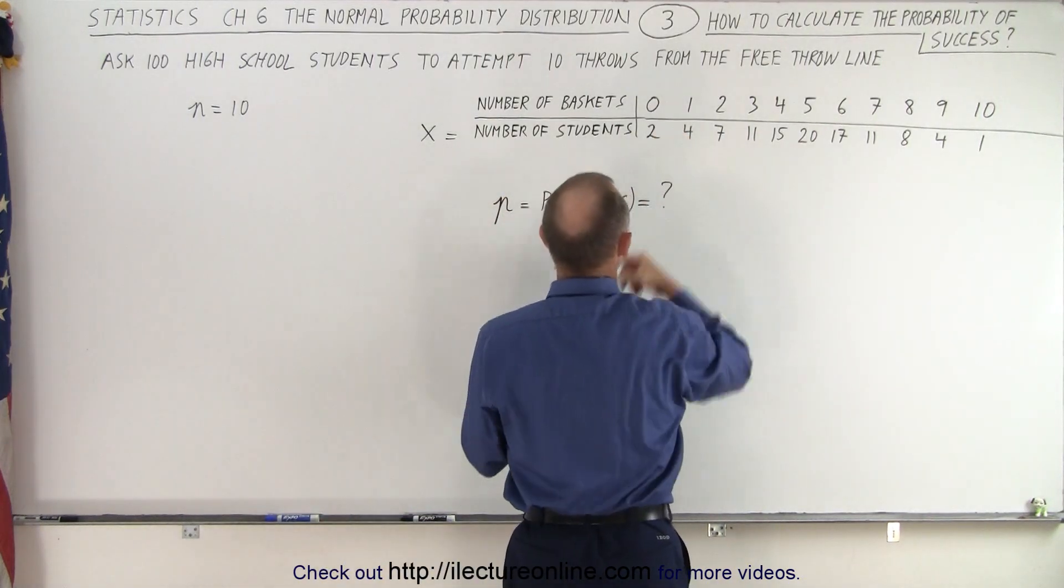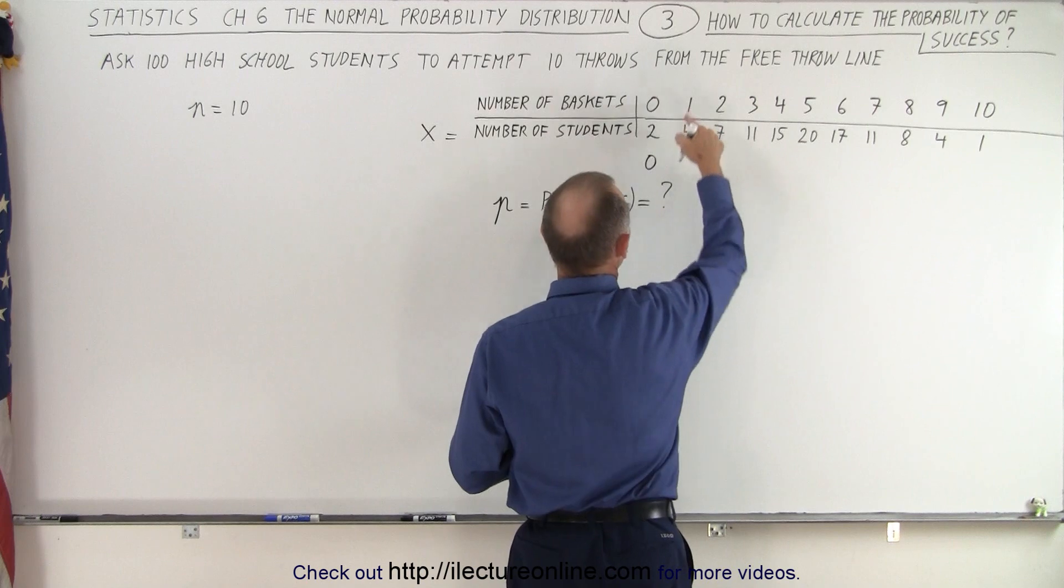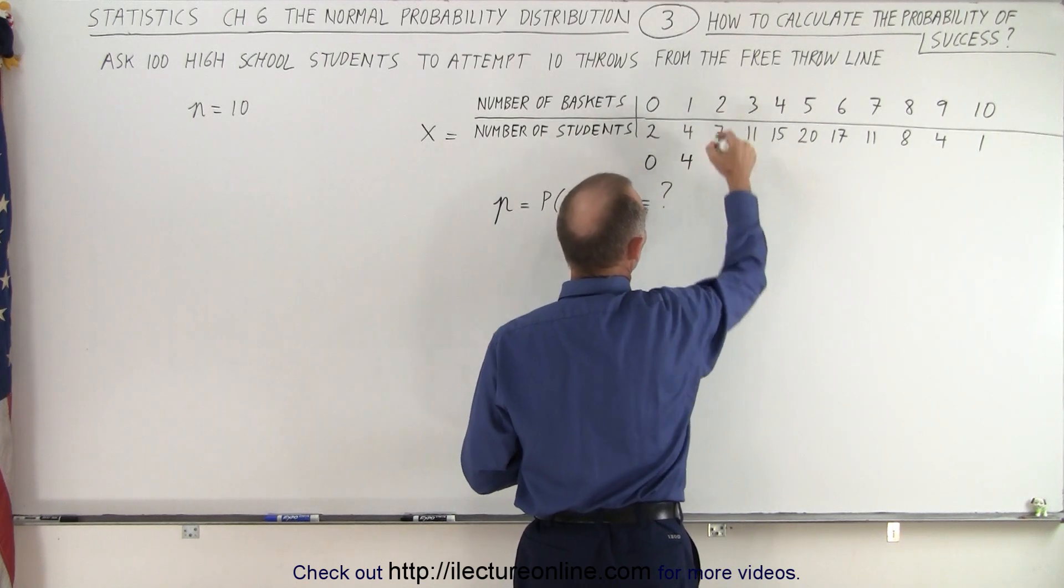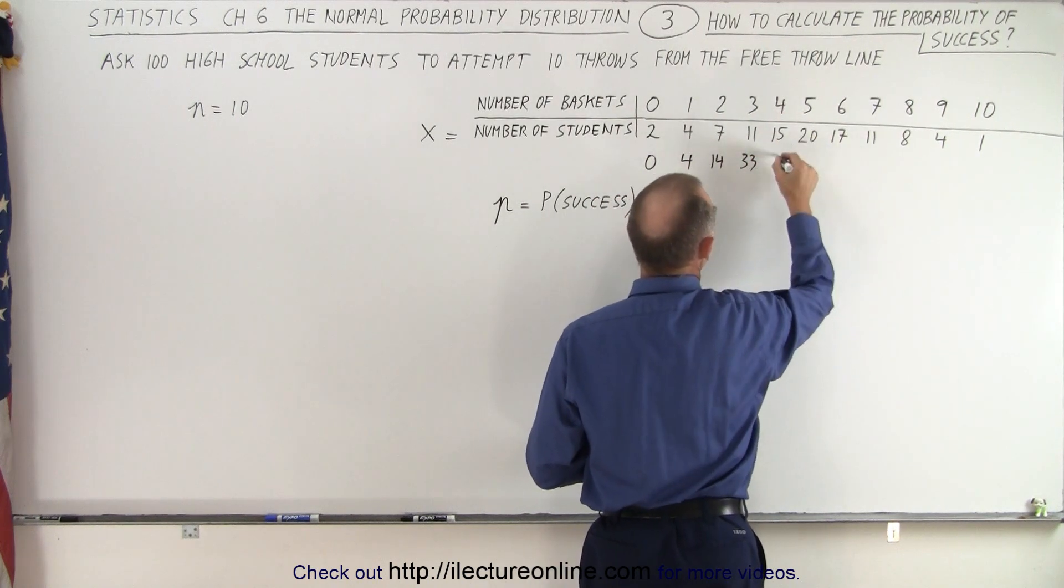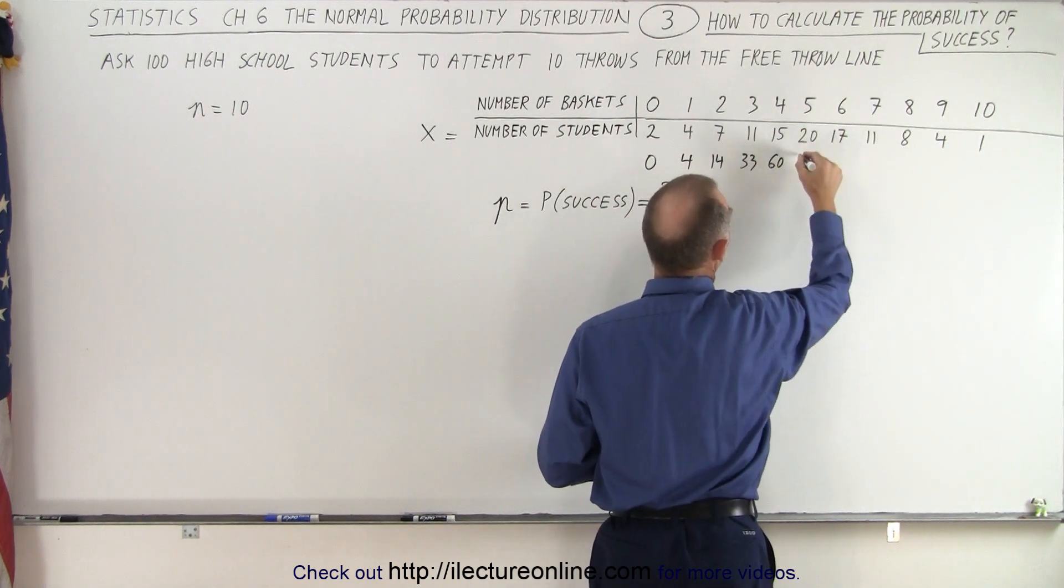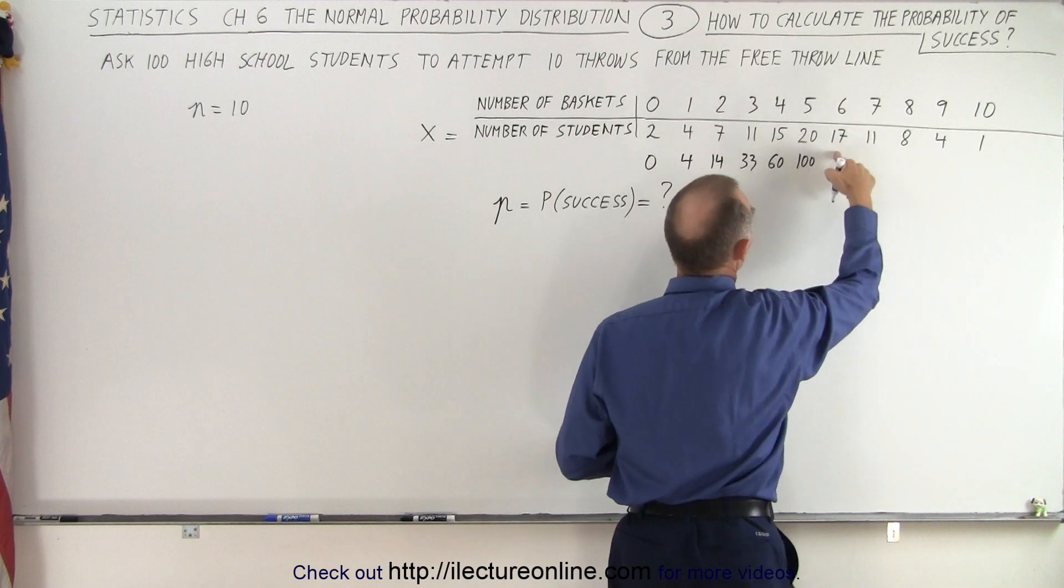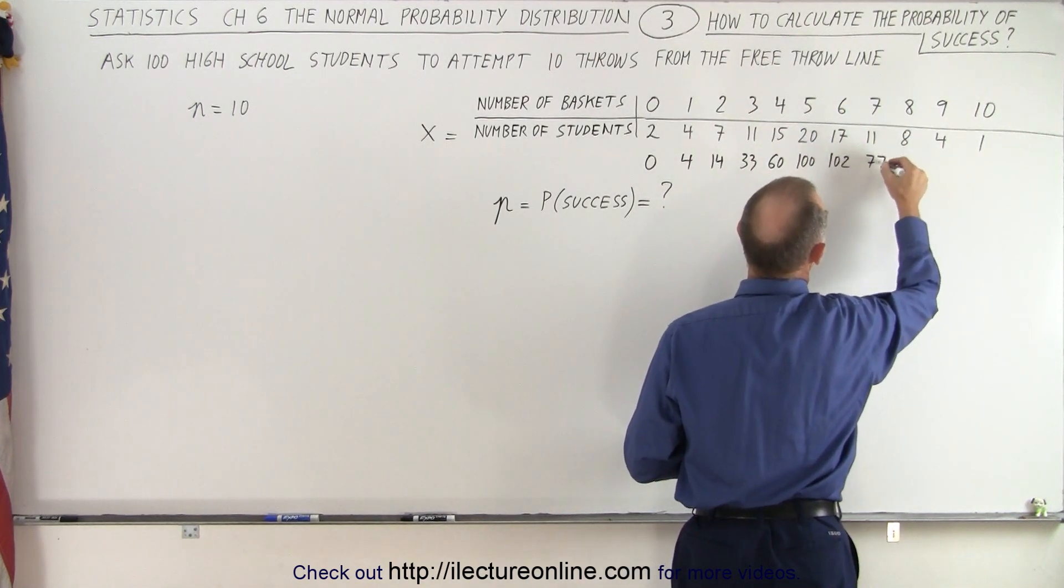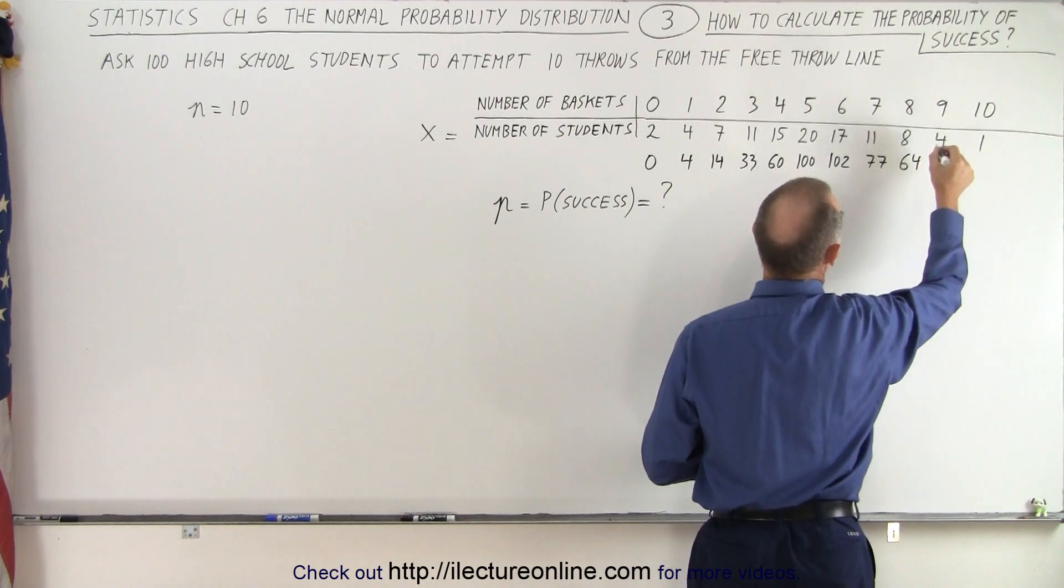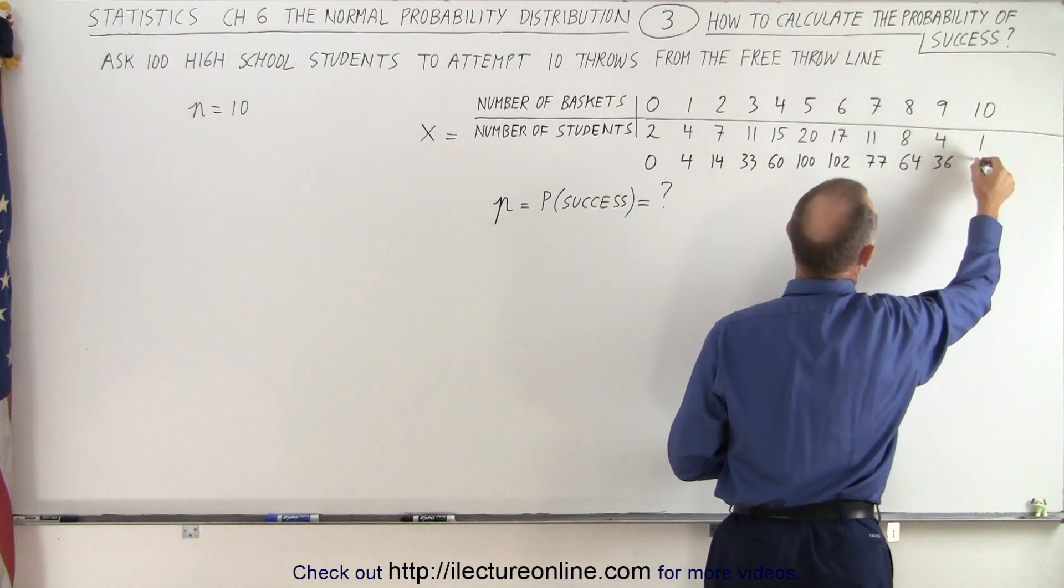So 2 times 0 is equal to 0. 4 times 1 is 4. 7 times 2 is 14. 11 times 3 is 33. 15 times 4 is 60. 20 times 5 is 100. 6 times 17, that's 102. 7 times 11, 77. 8 times 8, 64. 4 times 9, 36. 1 times 10, 10.